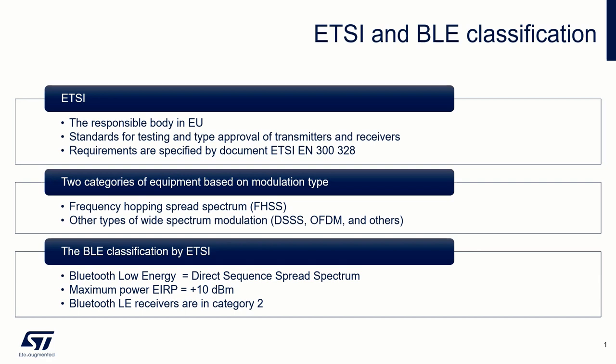ETSI defines different receiver categories based on maximum output power. According to this division, the receiver is considered as category two — non-adaptive equipment with a medium utilization factor greater than 1% and less than or equal to 10%, or adaptive equipment with a maximum RF output power of 10 dBm EIRP.